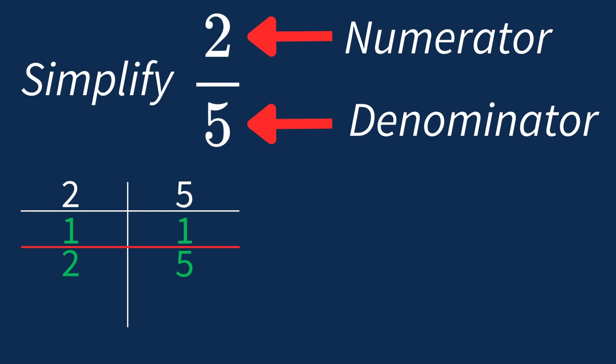This means we'll divide both the numerator and denominator by this common factor. Dividing the numerator 2 by 1 keeps it at 2. Then dividing the denominator 5 by 1 keeps it at 5.